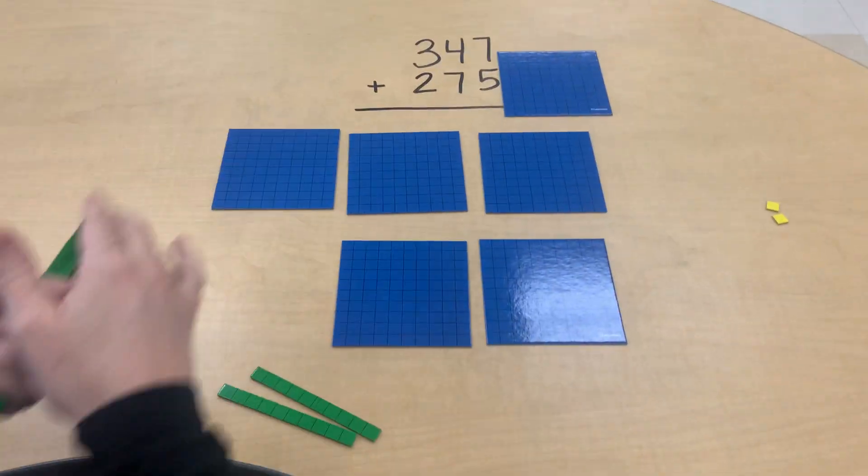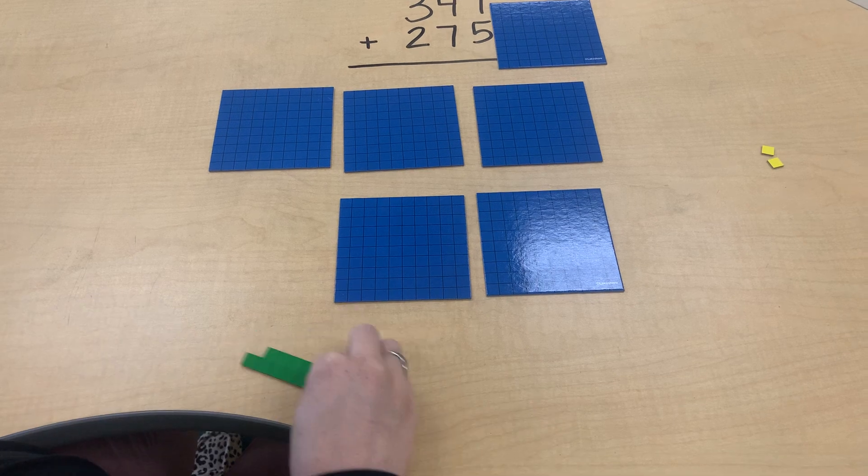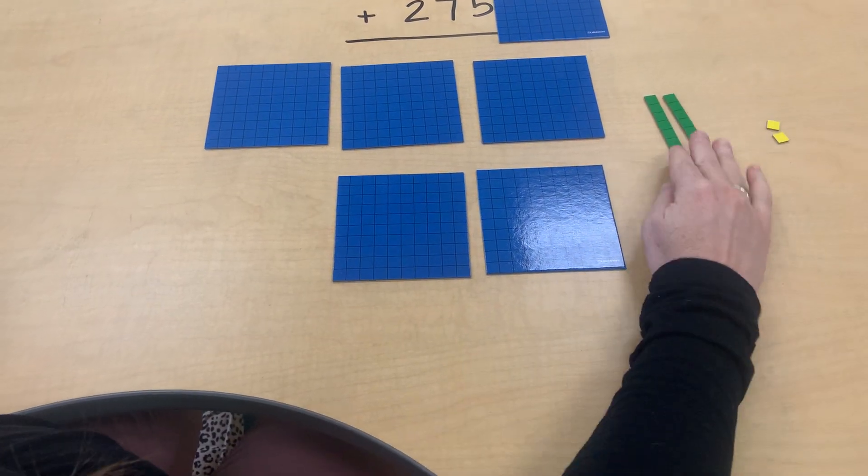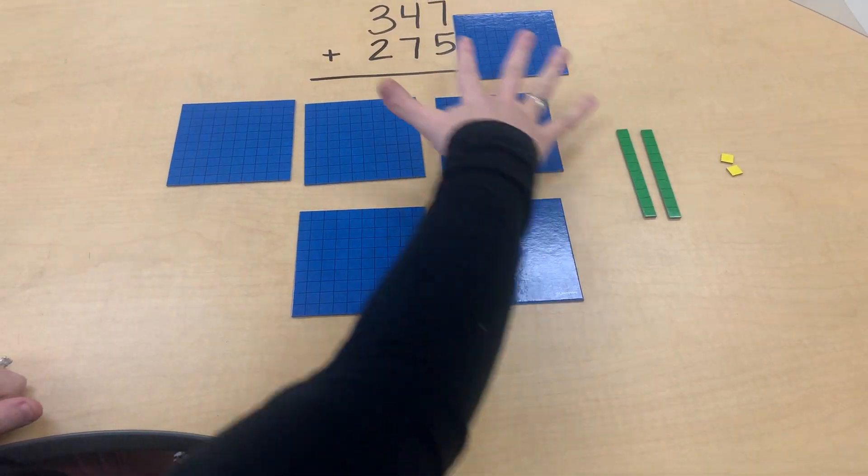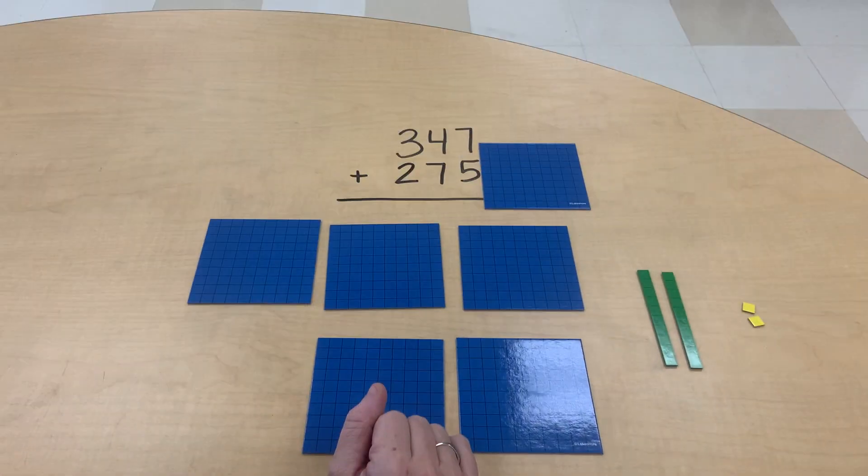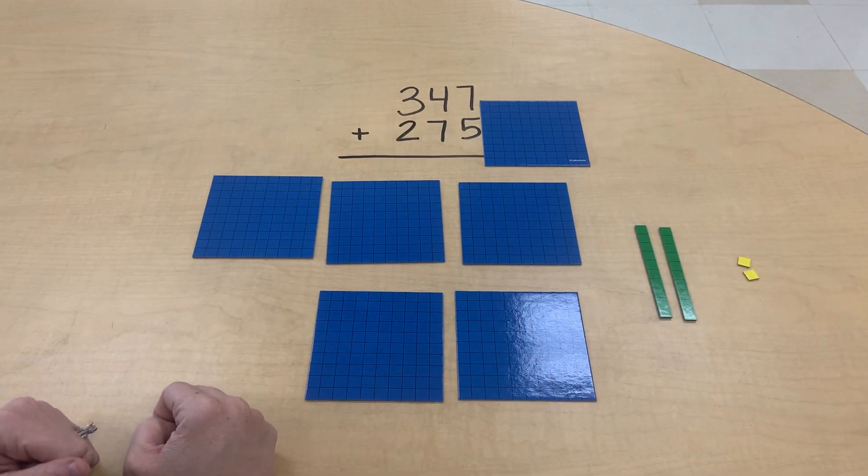Okay, so we'll put that there. And we have two tens left over out of those twelve tens. And then we are moving into our hundreds place and we will add those together as well.